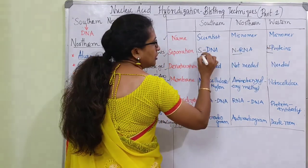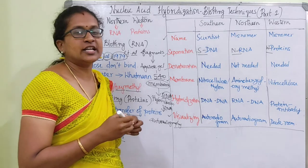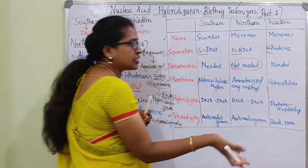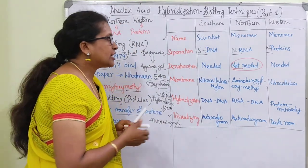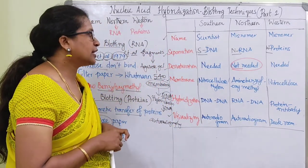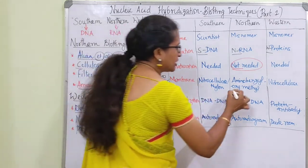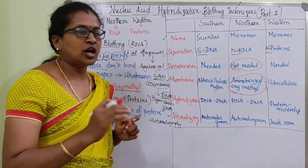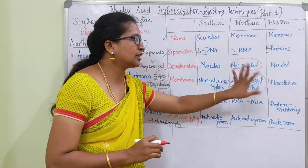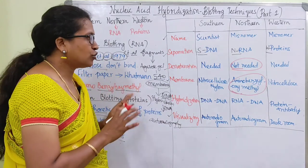For denaturation: DNA requires denaturation to become single-stranded, but RNA is already single-stranded so no denaturation is needed. For proteins, denaturation is done. For the membrane: RNA uses aminobenzyloxymethyl (ABM) paper, while DNA and proteins use nitrocellulose membrane.